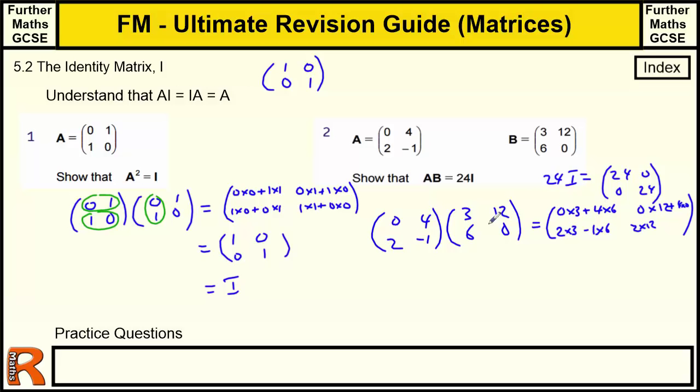And that gives us 0 plus 24 is 24. 6 take away 6 is 0. 0 plus 0 is 0. And 24 take away 0 is 24.